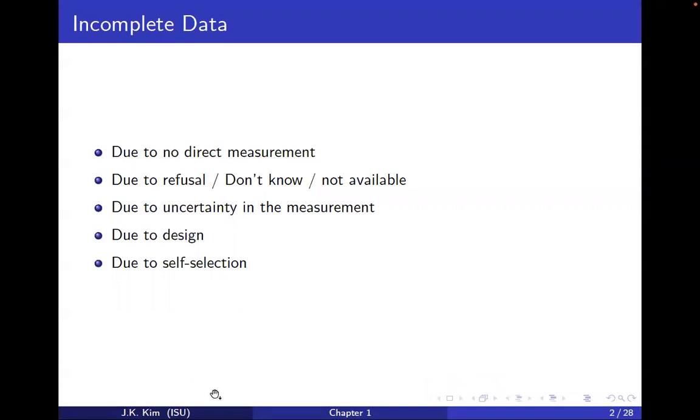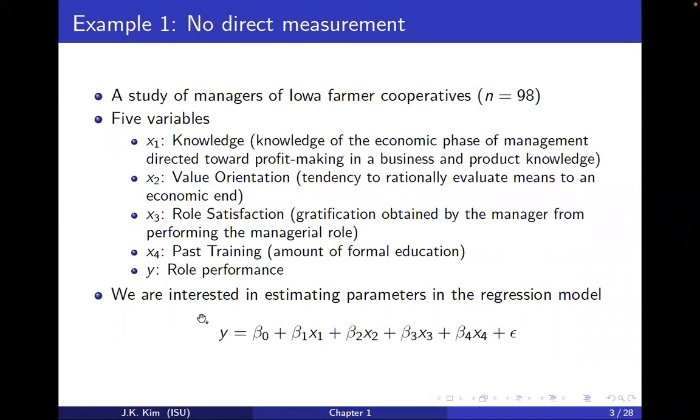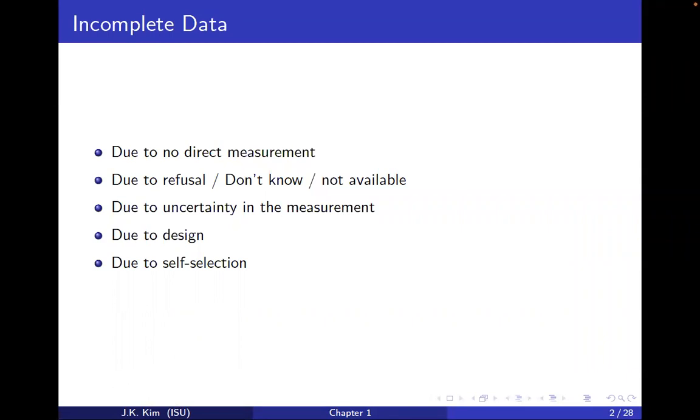So incomplete data refers to a very broad concept. Sometimes we don't have a direct measurement. Sometimes we have refusal or decline in participating in the survey. Sometimes incomplete data comes from inaccurate measurement, and sometimes we have missing data by design - sampling, which can be viewed as missingness by design. We also have some self-selection issues.